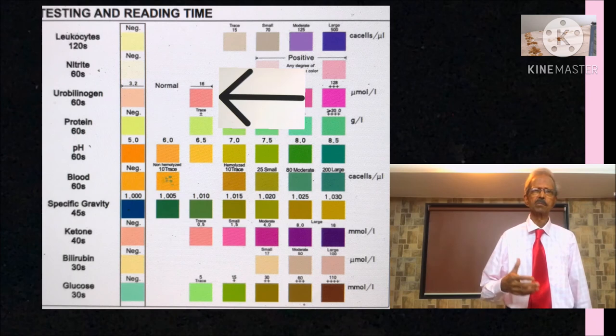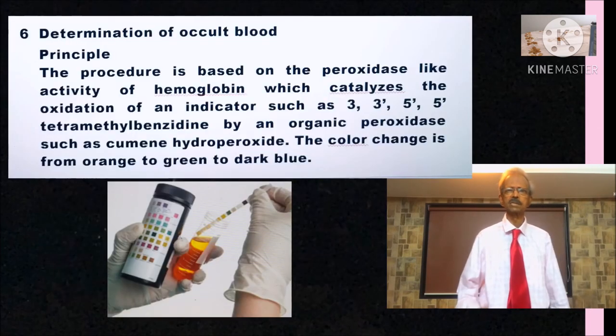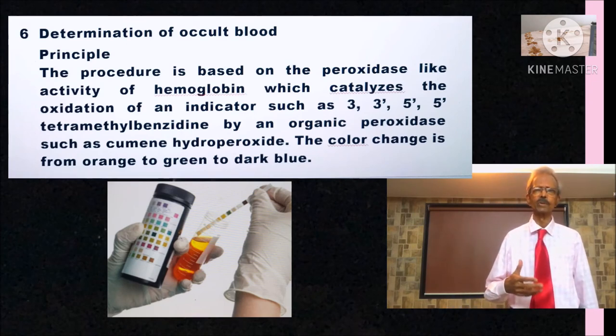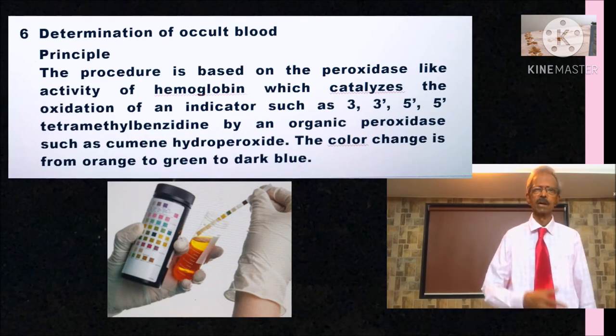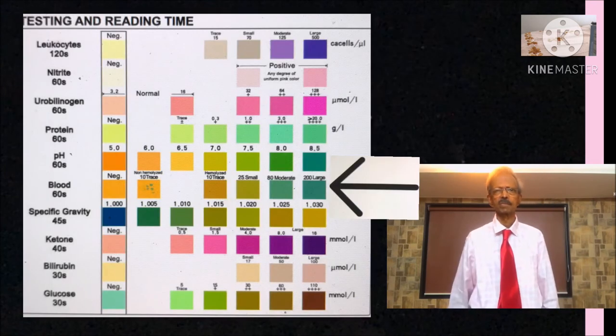For the determination of occult blood, the procedure is based on the peroxidase activity of hemoglobin present in blood which catalyzes the oxidation of an indicator such as tetramethylbenzidine and the color changes from orange to green to dark blue.